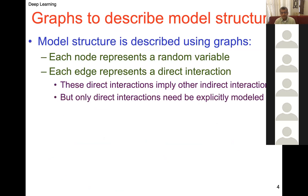In this method of representation, model structure is described using graphs. Each node represents a random variable and each edge represents a direct interaction. These direct interactions imply indirect interactions as well — when two variables interact, variables connected to them are also indirectly influenced. The model captures direct interactions, and indirect interactions are used for proper inference.